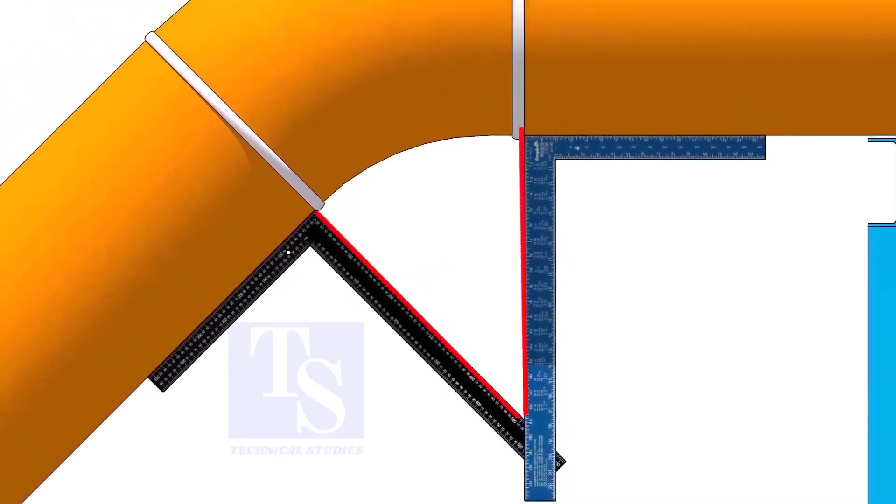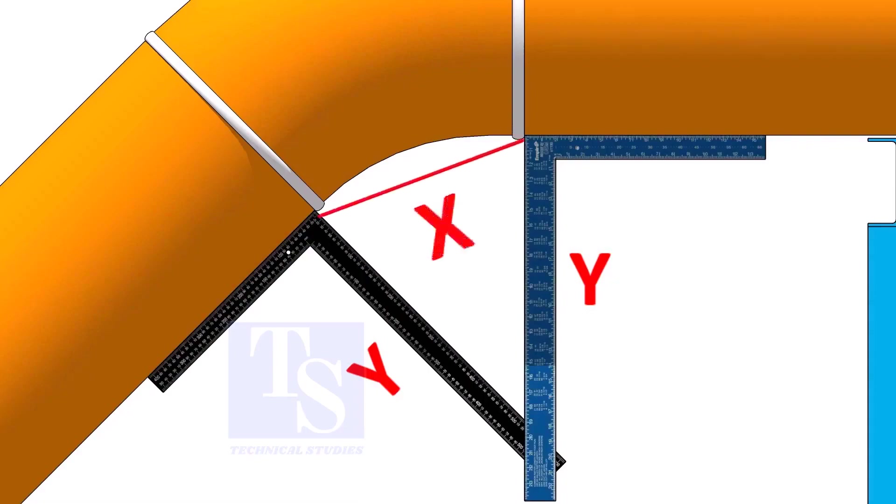Measure the distance from the pipe to the point where the right angles bisect each other. Measuring only one side is enough. Now, carefully measure the distance between the corners of the right angles.